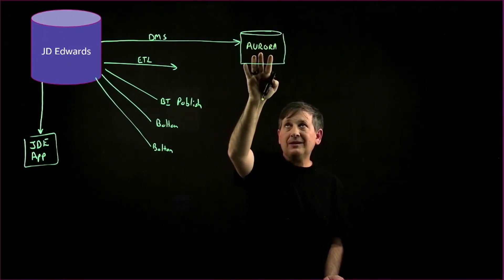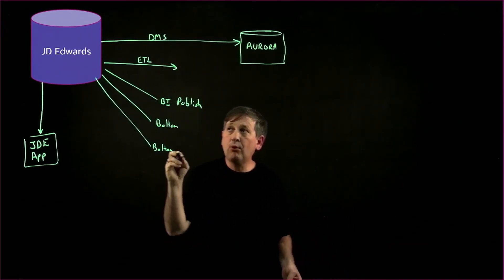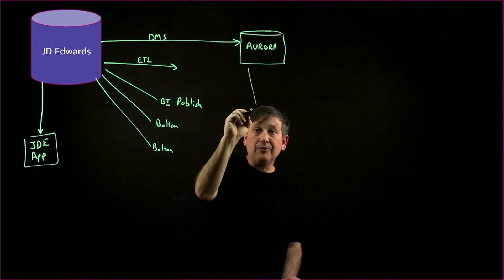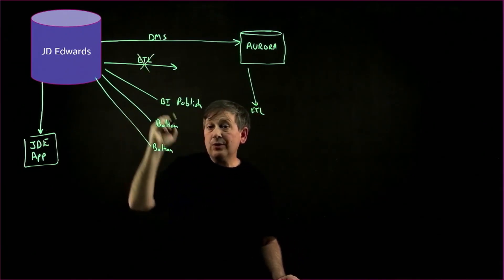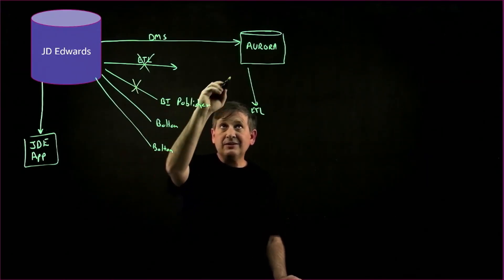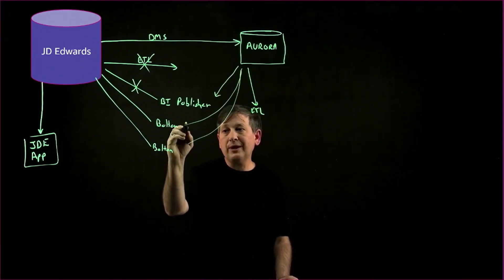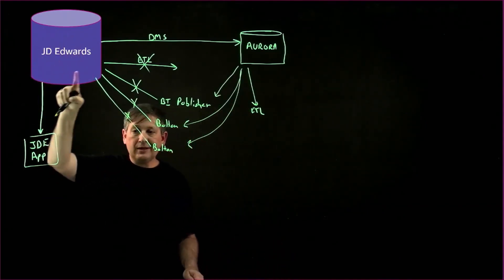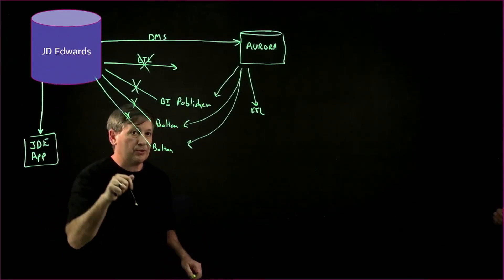Once we get this replica of the data into Amazon Aurora, we can actually repoint these sidecar applications. We can start doing our ETL straight out of Aurora, and we don't need to do it from our JD Edwards database anymore. Our BI Publisher, instead of hitting the JDE database directly, can pull out of Aurora. These bolt-ons can all be repointed to the Aurora database, thereby offloading the workload from the JD Edwards database itself and making the workload more predictable.